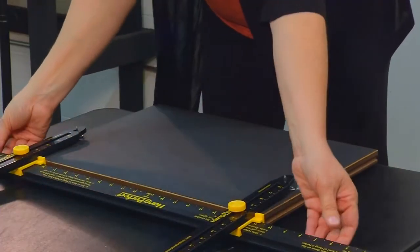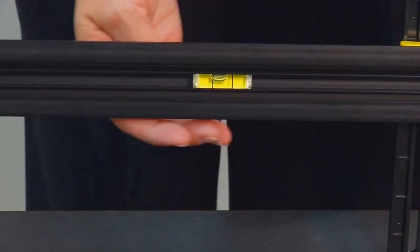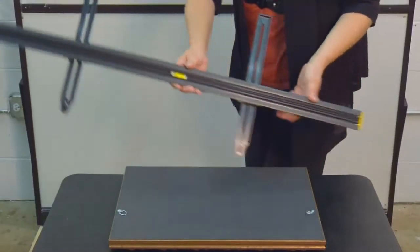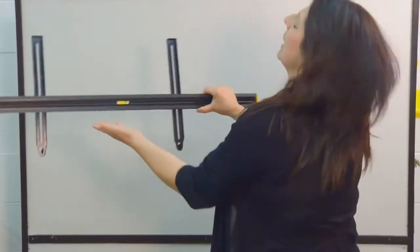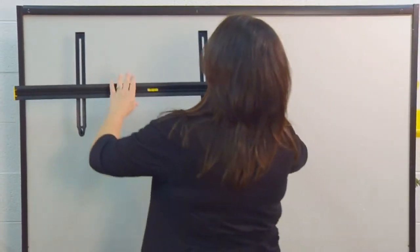Remove the Hang It Perfect from the back of the picture frame. You'll notice we have a built-in level that's used to help level the picture on the wall. Turn your Hang It Perfect so your level is facing you.